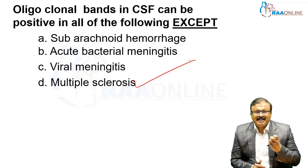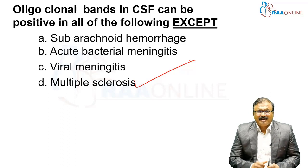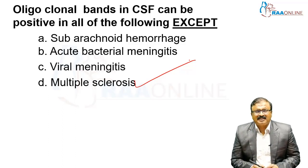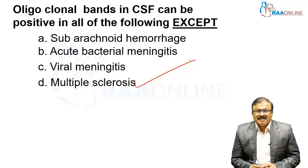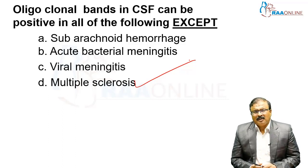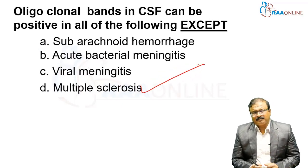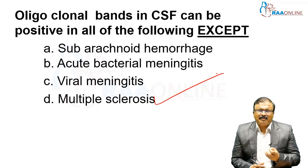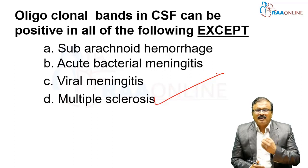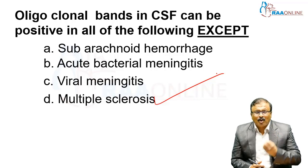In subarachnoid hemorrhage, the CSF will be totally different — blood-stained CSF and xanthochromia are found. The CSF IgG index is calculated and is very specific for multiple sclerosis. For acute bacterial meningitis and viral meningitis diagnosis, we look at the type of cells — polymorphs or lymphocytes — the protein elevation, and the reduction in glucose.